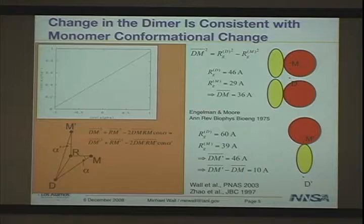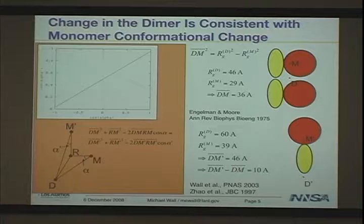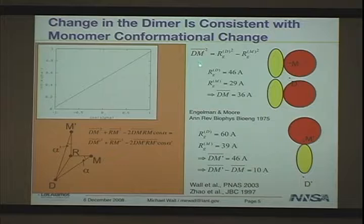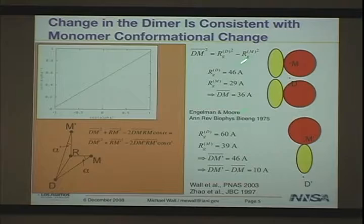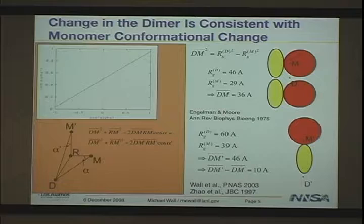We picked up methods originally used by Engelman and Moore, described in 1975, in a heroic small neutron scattering effort to map out the subunit structure of the ribosome. Based on the idea that by looking at radii of gyration of different subunits you can relate those to separations between the center of mass of different subunits in complex. By comparing the dimer data with the monomer data, we determined that the distance between the monomer center of mass and the dimer center of mass shifts by 10 Å upon extension, and this degree of extension was completely accounted for by internal rearrangements of the monomer.